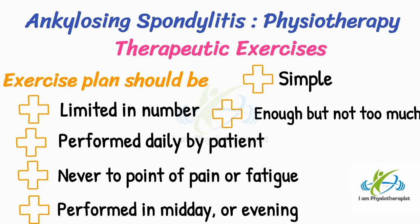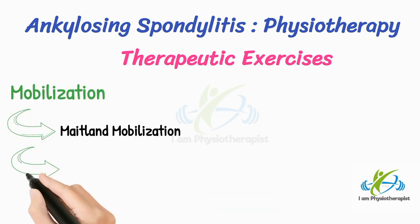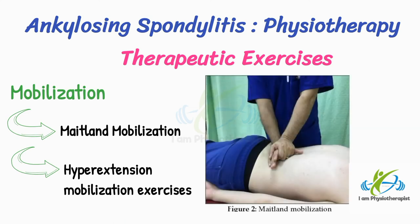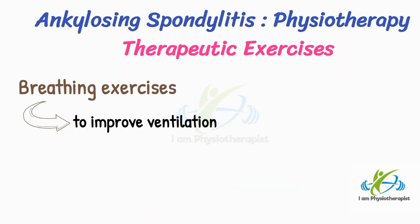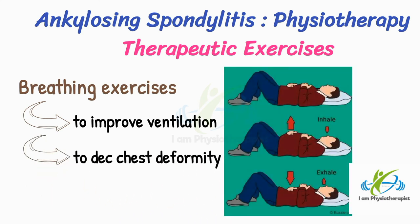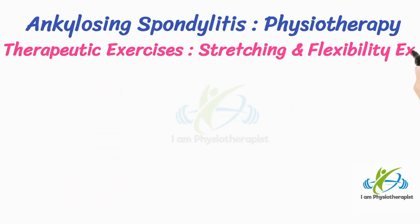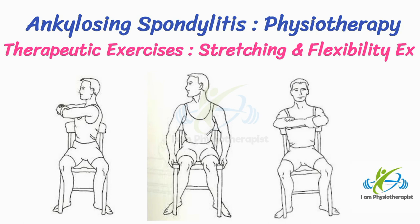Exercises should be performed at midday or evening for comfort. Types of exercises include Maitland mobilization techniques and hyperextension mobilization exercises, which have particular value. Deep breathing exercises improve ventilation and decrease chest deformity, including combinations of active movement of the trunk or extremities with deep breathing. Stretching and flexibility exercises are used for all tight muscles, such as pectoralis and trunk muscles.